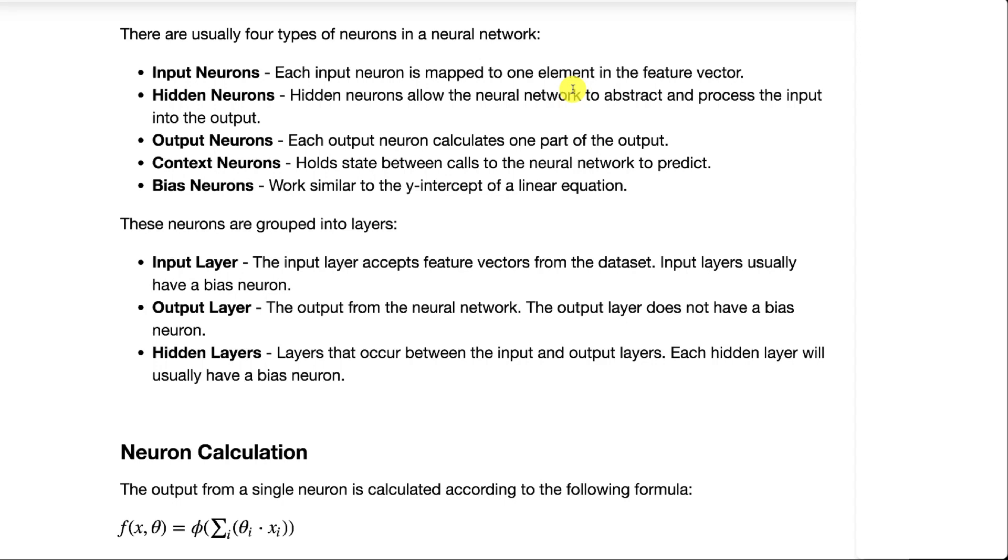There's usually four types of neurons in a neural network. Input neurons take in the input to the rest of the neural network. Hidden neurons, they're hidden because they're between the input and output neurons.